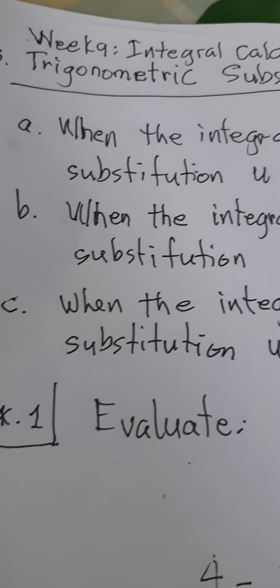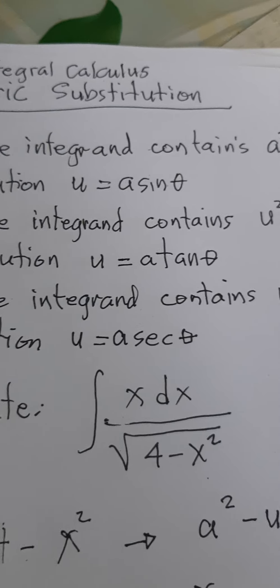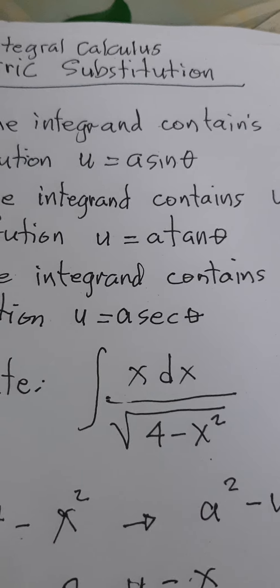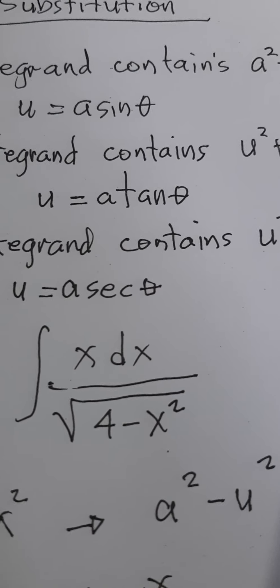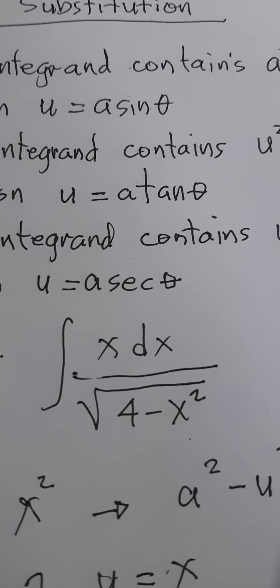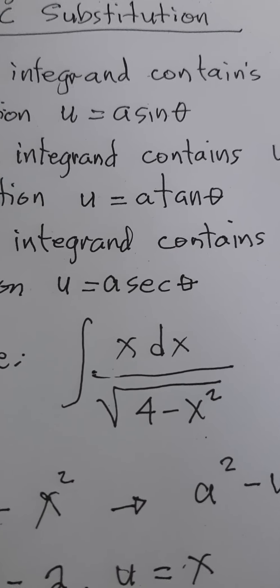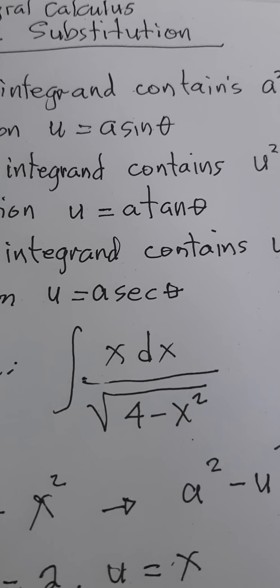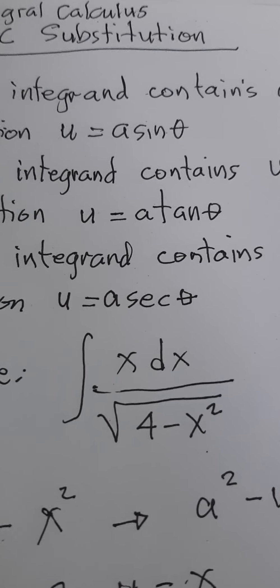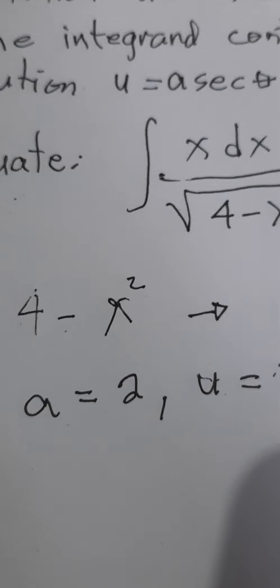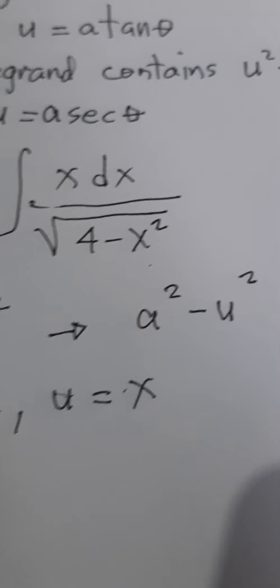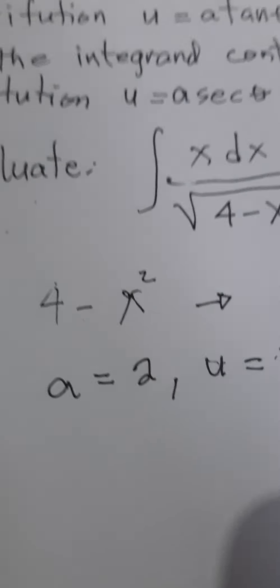Let us consider this example so we can understand the topic more easily. We are required to evaluate the integral of X dx divided by the square root of 4 minus X squared. By inspection, we can see that the integral contains the form A squared minus U squared — that is 4 minus X squared — where A equals 2, so 2 squared is 4, and U squared equals X squared.